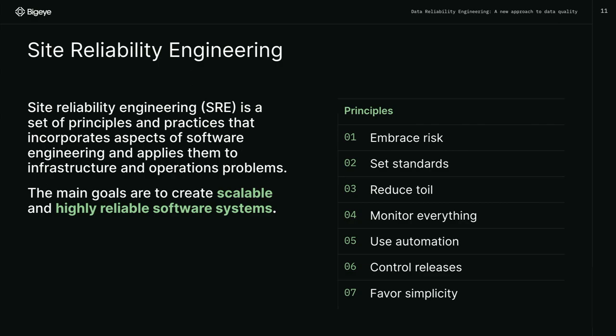Embracing risk — know that things are going to break; they will, it's a fact of life. Set the standards for what you expect your systems to perform. Reduce the toil by automating as much as possible — you shouldn't be doing repetitive work. Monitor everything so that you know when something actually breaks. Use automation to solve the problems for you. Control your releases so you're not unpleasantly surprised when something goes wrong. And favor simplicity, because difficult tools are difficult to implement and no one wants to use them, so the process will never be followed.